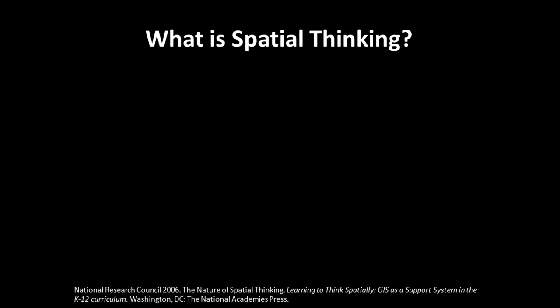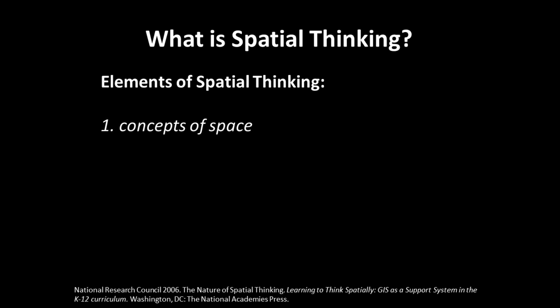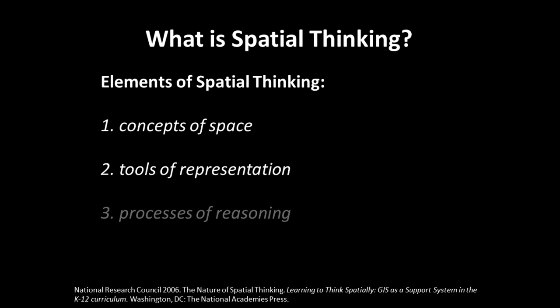Spatial thinking has been more formally defined as being composed of three elements: the concepts of space, tools of representation, and processes of reasoning. In the following slides, I explain each of these elements in further detail.